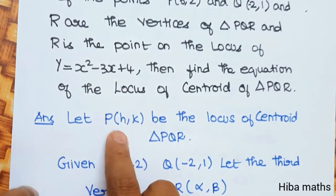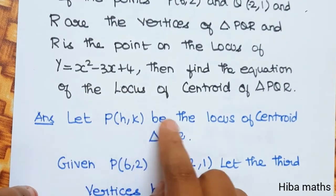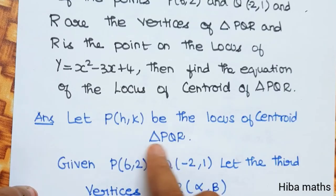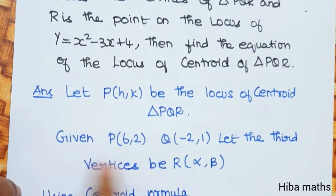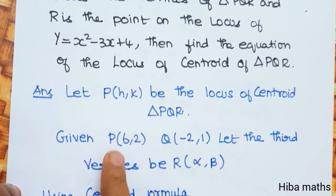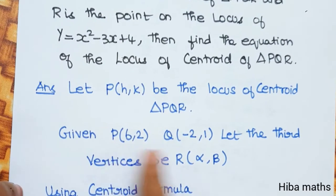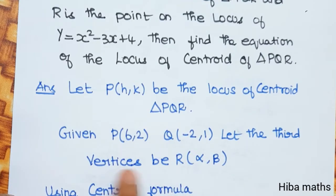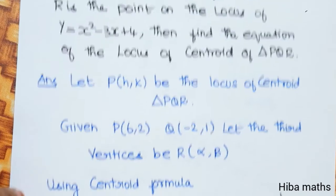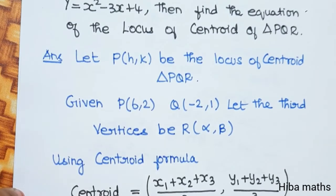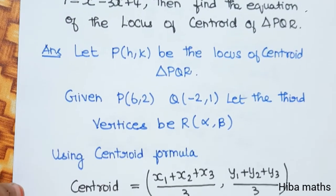Let P(H, K) be the locus of the centroid of triangle PQR. We have three vertices: P is (6, 2), Q is (-2, 1), and the third vertex R is (α, β).